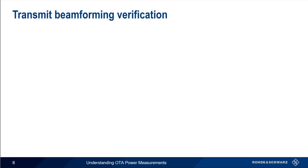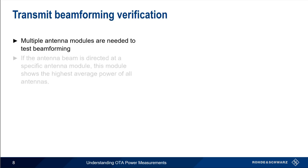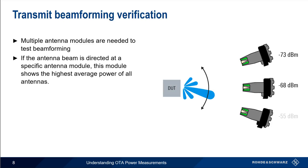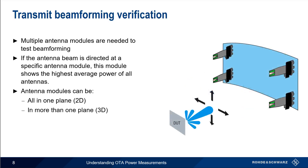So how do we verify the performance of transmitted beams? Unlike general over-the-air power measurements, multiple antennas or sensor modules are needed to test beamforming. The methodology is fairly intuitive: if a beam is directed towards a specific antenna module, that module will show the highest average power of all the modules. We can arrange the antenna modules in two main ways — either all in one plane for a two-dimensional measurement, or in more than one plane for a three-dimensional measurement that can measure elevation as well as azimuth of the transmitted beams.